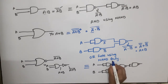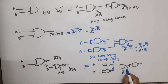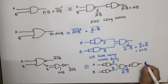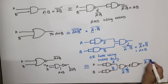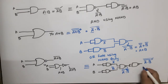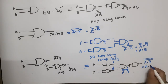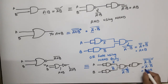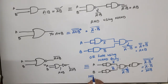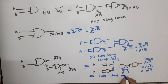Here we get A bar, then B bar, then A bar dot B bar complement. After applying one more complement, the two complements cancel, and final output is A bar dot B bar. This is NOR gate using NAND only.